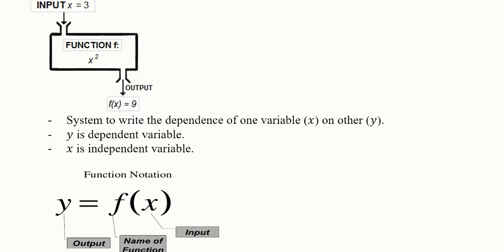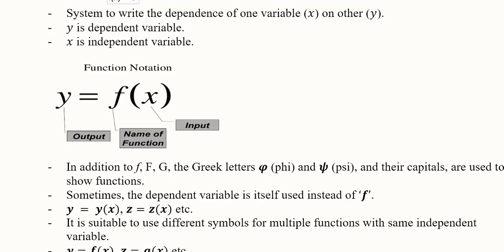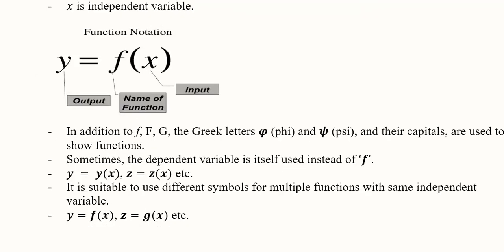Usually we have y and x as the dependent and independent variables or inputs and outputs. You can see this is the output, this is the input, and this is the name of the function. Instead of small f, we can write capital F, G, or Greek letters like φ (phi) or ψ (psi). They are all perfectly fine because this is just a notational matter.